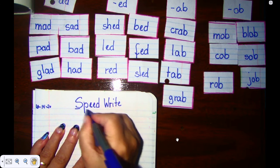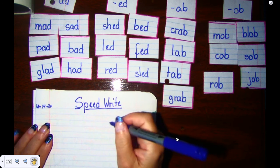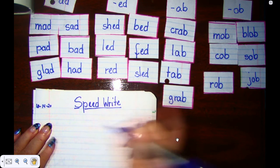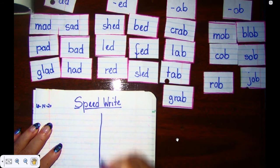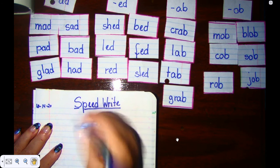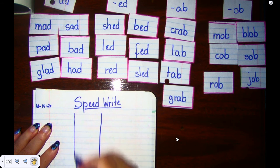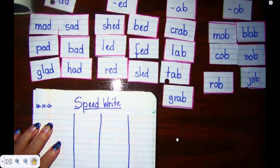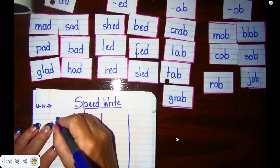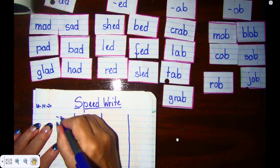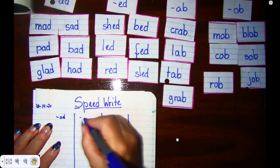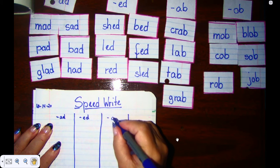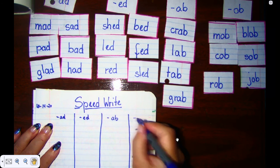Remember that when we do a speed write, you are writing fast but neat. I have four columns, so I go down the middle, go down this middle, go down this middle. And then I'm going to write my headers on the top. So I have ad, ed, ab, and ob.